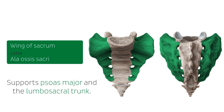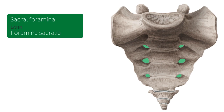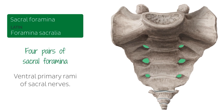We also have here some important structures — these holes highlighted in green are known as the sacral foramen. On the sacrum you're going to find four pairs of sacral foramen; we can see three clearly highlighted here, but notice there are two other foramen a bit above. On the anterior aspect, the foramen will be transmitting the ventral primary rami of the sacral nerves, and on the posterior aspect the dorsal primary rami.